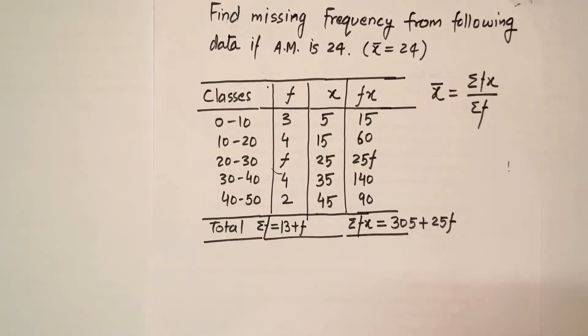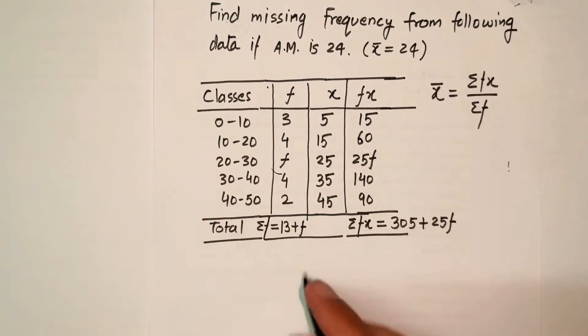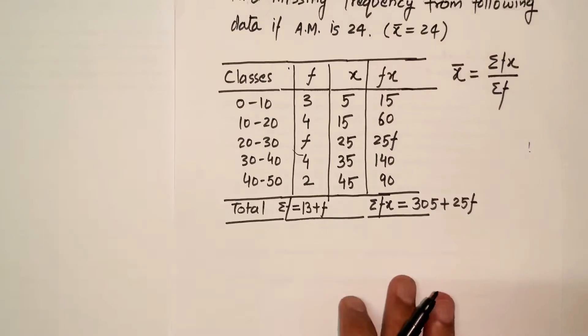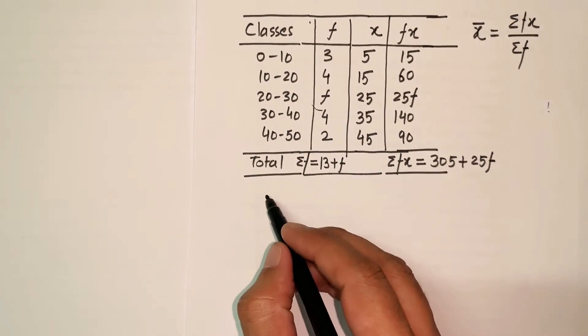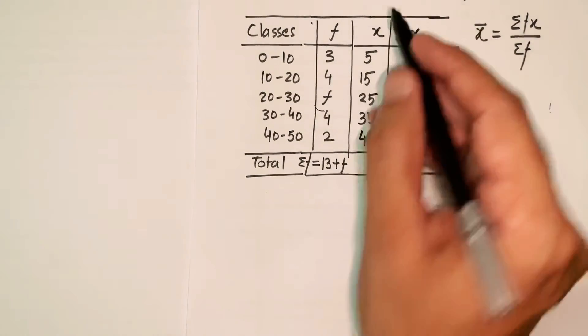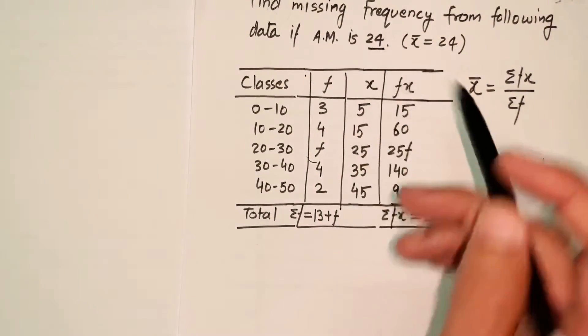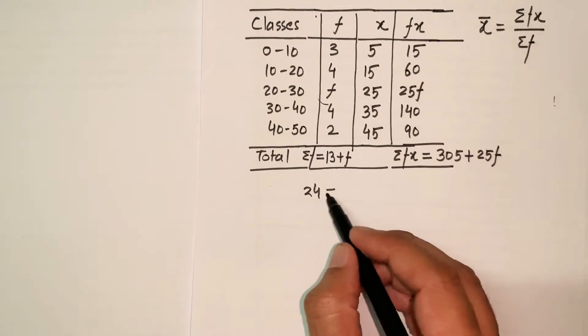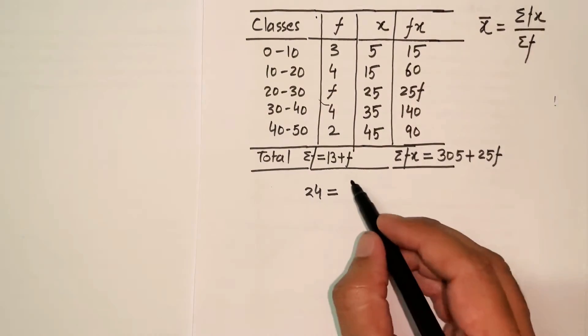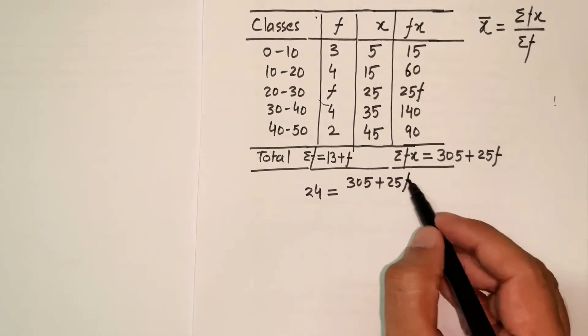Now things are pretty easy. I'm going to substitute all this stuff in the formula. I have x̄ which is 24, given in the question. The arithmetic mean is 24, so I'm to substitute the values: x̄ is 24 equals summation of fx, that is 305 plus 25f, divided by summation of f, which is 13 plus f.